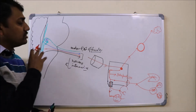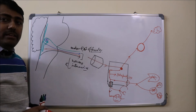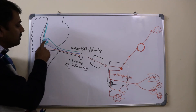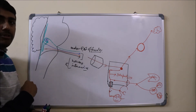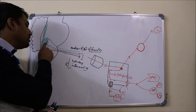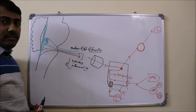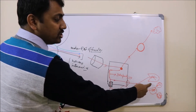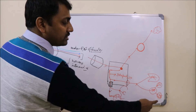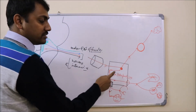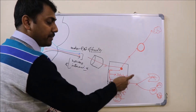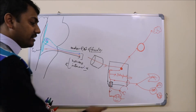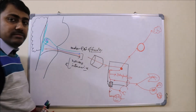Now let us see at which points a lower motor neuron lesion of the facial nerve can occur. At the level of the nucleus in the lower pons, a vascular lesion can produce loss of lacrimation, loss of taste from the anterior two-thirds of the tongue, loss of salivation from the submandibular and sublingual glands, hyperacusis due to paralysis of the stapedius muscle, loss of pain and temperature from the external ear, and facial muscle paralysis.